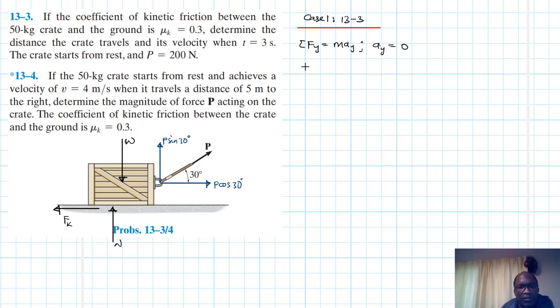What do we have here? We have N plus P sin 30 minus W equal to zero. Therefore our N is just going to be equal to W minus P sin 30. And we know that our W is just going to be equal to mg which is equal to 50 times 9.81, and our P is just equal to 200.